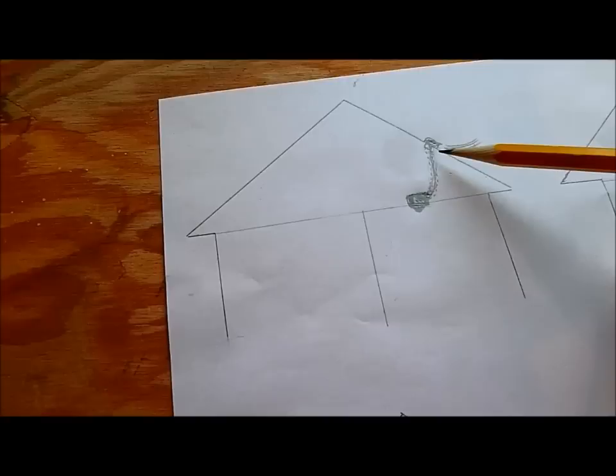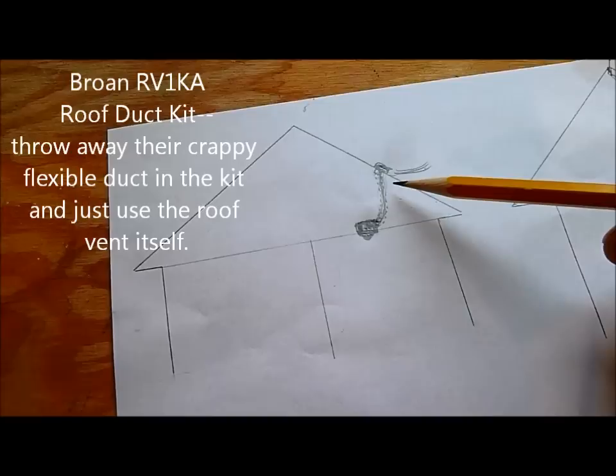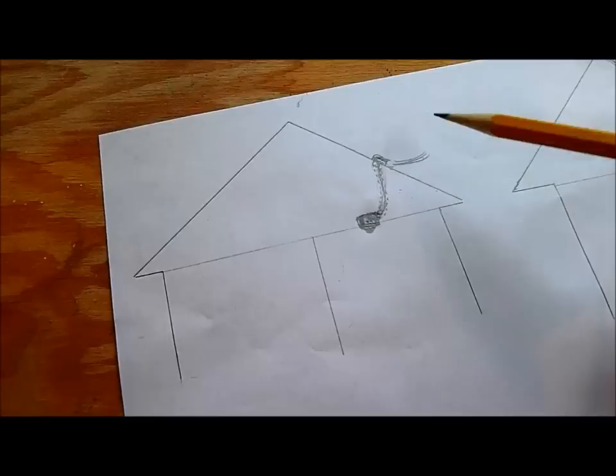For me, the best place to exhaust this hot moist air is through the roof. Some people don't like to go through the roof because you have to cut a hole but I don't find it to be that big a deal. Broan makes a vent kit that works pretty well. That's available at both the big box stores.